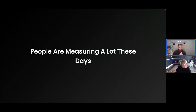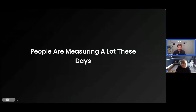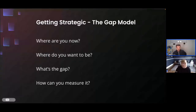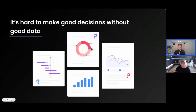We call this kind of the gap model — being able to say, okay, this thing is bad or it's not good enough, and taking that to a data-driven conversation: where are you now, where do you want to be, what's the gap, and how can you measure it? It's really hard to make good decisions without good data. A lot of ISVs — people shipping into customer environments — don't have anywhere near the quality of data that SaaS companies have had historically.